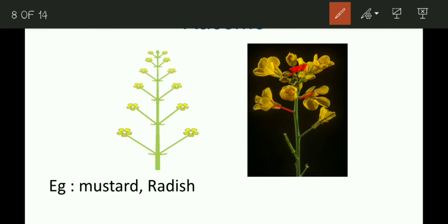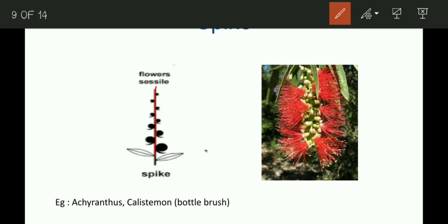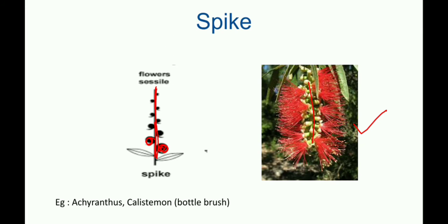The next type is spike. In spike inflorescence, the flowers are sessile — meaning without a stalk, no pedicel is present — and the main axis remains elongated. You can see in the picture of bottle brush (Callistemon) that flowers are sessile and there is no pedicel, only the elongated main axis. Examples of spike inflorescence are Acanthus and Callistemon.